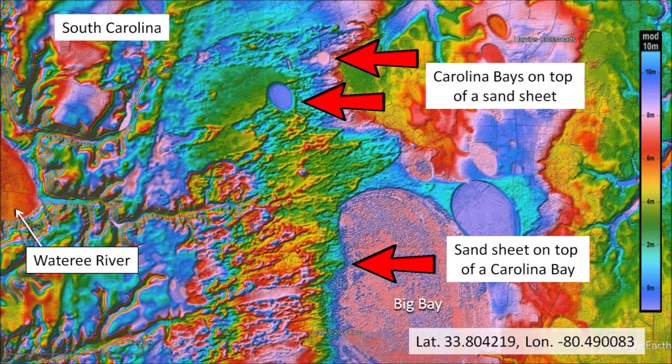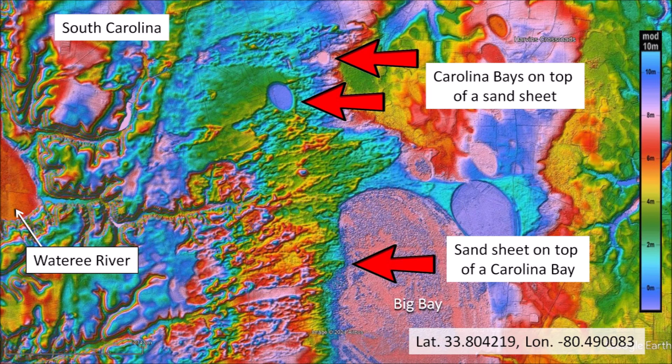A large Carolina Bay called Big Bay is located 5 km north of Pinewood, South Carolina. The western part of Big Bay is covered by an extensive sand sheet with many pointy chevrons, and the sand sheet itself is overlaid by well-defined Carolina Bays. The source of the sand sheet was drawn by wind from the east bank of the Watery River, about 7 km west of Big Bay. A publication by Brooks et al. in 2010 reported optically stimulated luminescence dates in the sand sheet ranging from 30,000 to 74,000 years ago, leading to the conclusion that the bays developed over thousands of years under very different climatic conditions than the present.